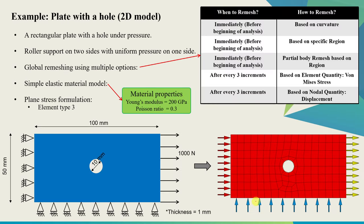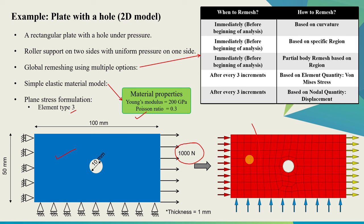Now let's see one simple example to understand how this really works. This is the geometry — a rectangular plate with a circular hole at the center. The left edge cannot move in x direction and the bottom edge cannot move in y direction. We will apply some uniform pressure on the right edge. For material, I will use a simple elastic material model with Young's modulus 200 gigapascal and Poisson's ratio 0.3, and assume plain stress formulation with element type 3. Initially we will start with a very coarse mesh and then see different options for how we can remesh this body.